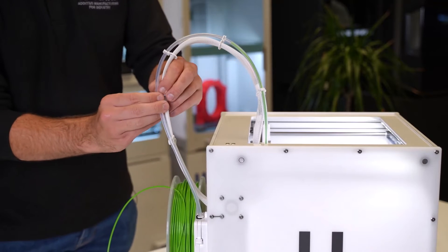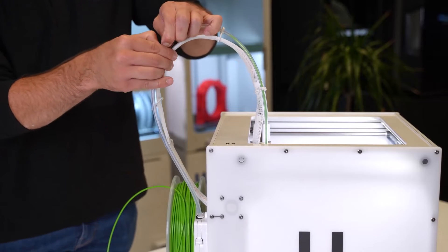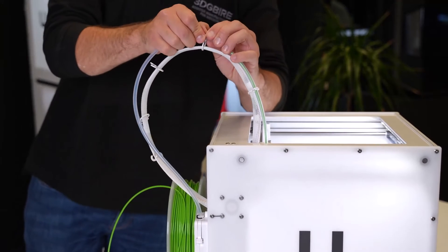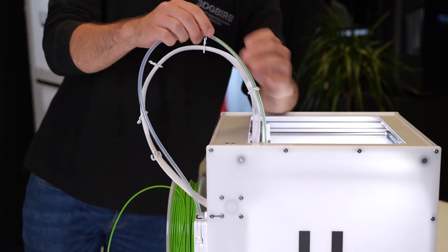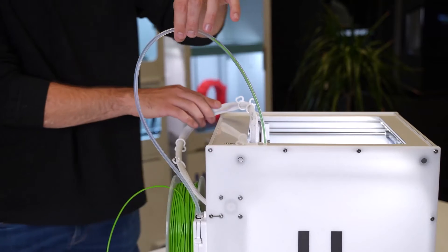Just undo those—pop one side off, pop the other side off, and do that for all five clips that are on there. Now we've got these two completely separate.